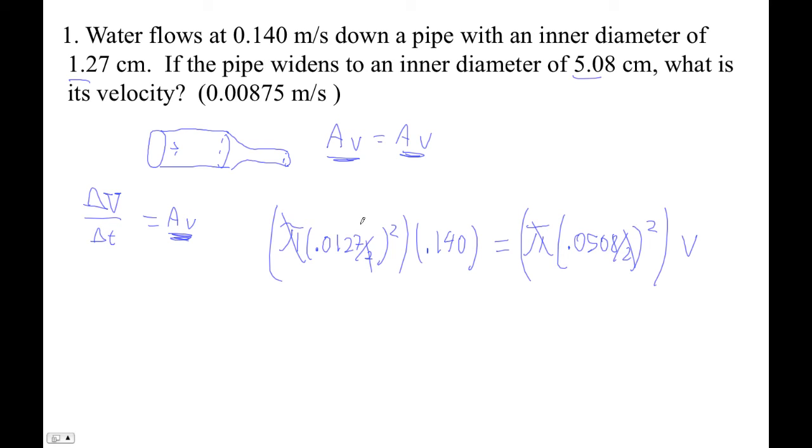Whether we use centimeters or meters, that goes away. This would also work if I multiply these by 100. So I'm going to simply go 1.27 squared times 0.14 divided by 5.08 squared. And I get that my velocity is 0.00875 meters per second.